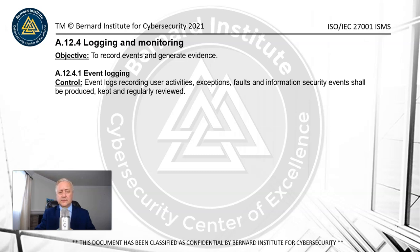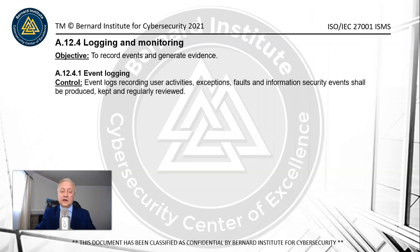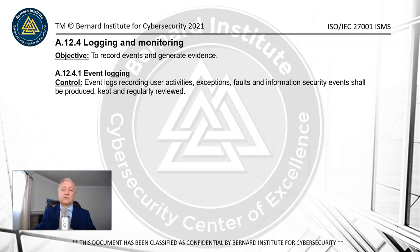The control points read as follows. First, there's an objective for every control set in ISO 27001: to record events and generate evidence — a pretty straightforward goal. Control A.12.41 covers event logging: event logs recording user activities on systems. Exceptions, faults, and information security events shall be produced, kept, and regularly reviewed to make sure they're functioning as planned.